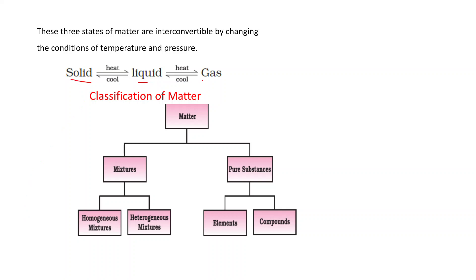These states of matter are interconvertible by changing temperature and pressure. A solid may convert into liquid, liquid may convert into gas, and the reverse is also possible. On the basis of chemical composition, matter is classified into two categories: mixtures and pure substances. Mixtures are further classified as homogeneous and heterogeneous mixtures. Pure substances are further classified as elements and compounds. All of these — homogeneous mixture, heterogeneous mixture, elements, and compounds — were discussed in lower classes.